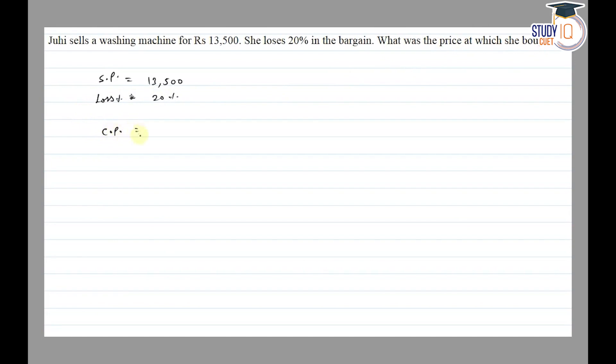Find out here, the formula is going to happen. CP formula is going to happen: 100 upon 100 minus loss percent into SP. So we have 100 upon 100